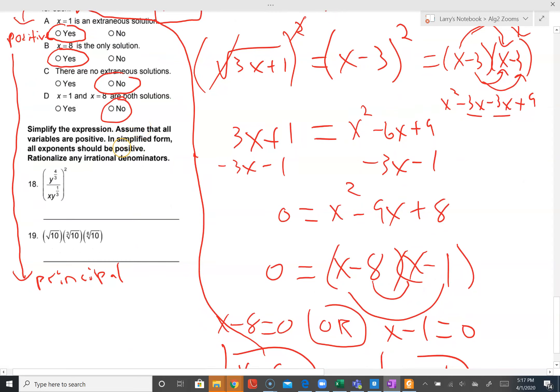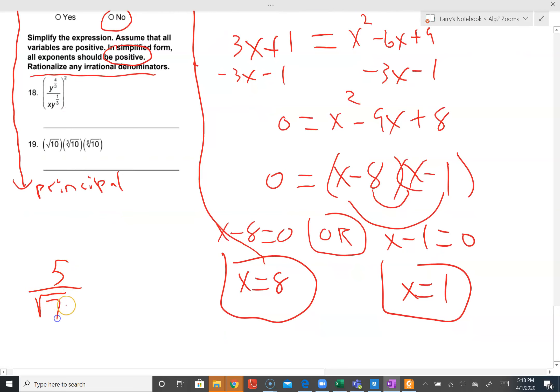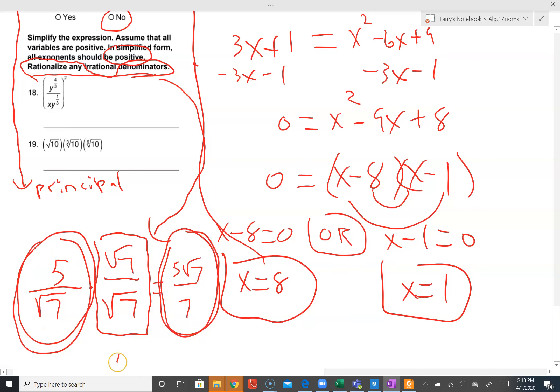Number eighteen. Simplified expression. Assume all variables are positive. In simplified form, all exponents must be positive. Rationalize any irrational denominators. If we end up with something that has a square root in the bottom, this is an irrational number. Typically we will rationalize the denominator. We multiply it by this special version of one. A square root times itself simply comes out. That's rationalizing the denominator. This number here is one.